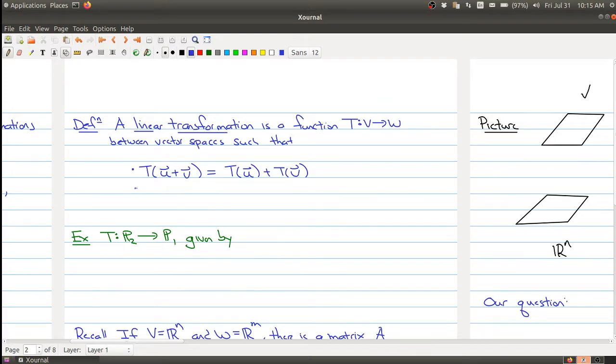And how does scalar multiplication behave? Well, if you take a vector and scale it by a constant c, it's the same thing as first evaluating the function at u and scaling the resulting vector in W. So this operation here is on the V side and this operation here is on the W side.